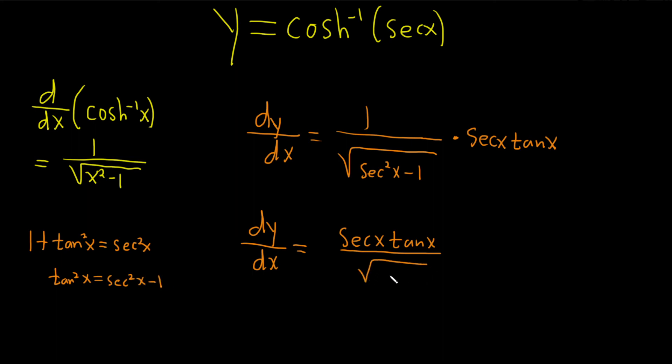This is actually the square root of tangent squared. This is equal to secant x tangent x, and if we assume tangent is positive, this is just tangent x.